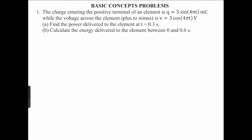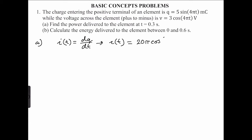The first problem states that charge entering the positive terminal of an element is q, given in millicoulombs, while the voltage across that element, plus to minus, is given in volts. Part A: find the power delivered to the element at 0.3 seconds. We know the relationship between charge and current is i = dq/dt. Integrating, we get i(t) = 4 × 5 = 20π cosine(4πt), in milliamperes.